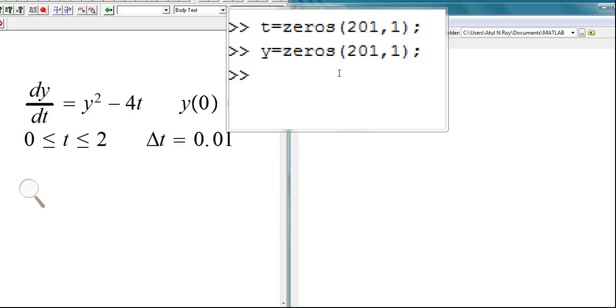Now we know that our initial point is 0,1, so we will say the first value for t, take it as 0. Then for y, we are going to take the first value as 1.